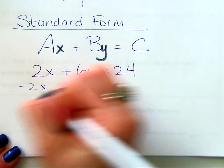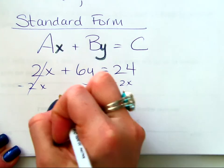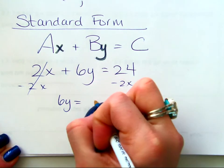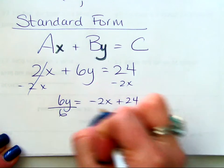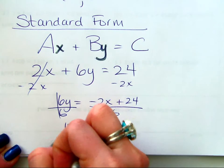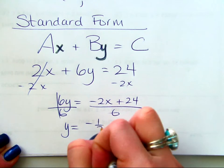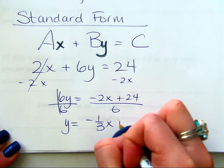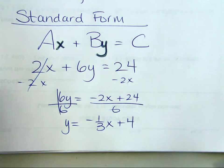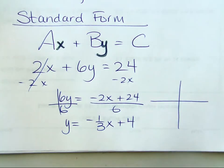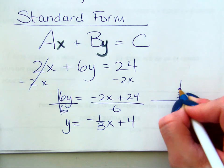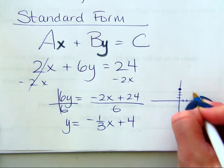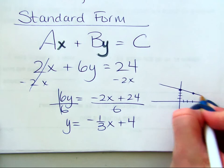You would subtract 2x. That would get you 6y equals negative 2x plus 24. You would divide by 6. y would equal negative 1 third x plus 4, right? And then, you would say, okay, I'm going to go to plus 4, just like you did on your review, and then I'm going to go down 1 over 3. Ta-da! I just graphed it. Woo-hoo! Okay.